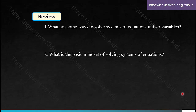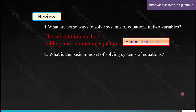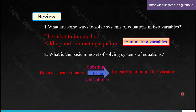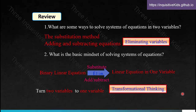Let's do some review first of systems of equations in two variables. What are some ways to solve systems of equations in two variables? Well, we could use the substitution method or adding and subtracting the equations. This is all based off of the idea to eliminate as many variables as possible so we can solve the linear equation. The basic mindset is to turn a binary linear equation, using substitution or elimination, into a linear equation in one variable. Again, this is transformational thinking.